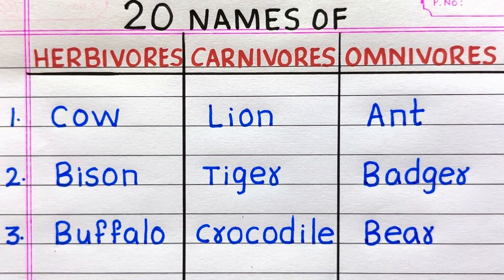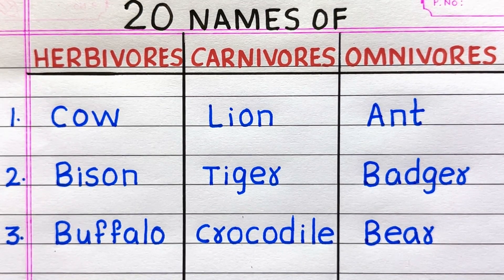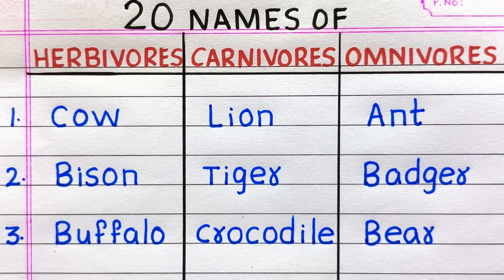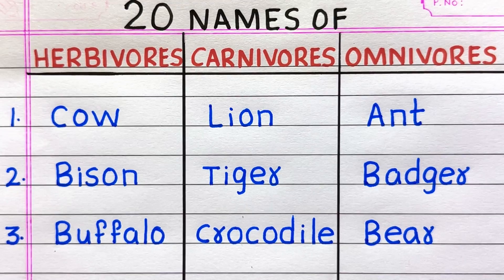The name of the first herbivore animal is Cow. 2nd Bison. 3rd Buffalo. The name of the first carnivore animal is Lion. 2nd Tiger. 3rd Crocodile. The name of the first omnivore animal is Ant. 2nd Badger. 3rd Bear.